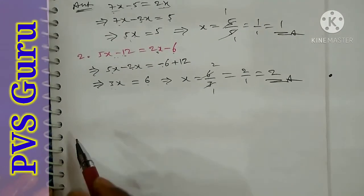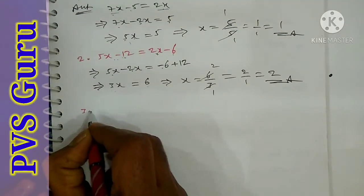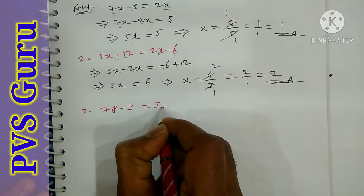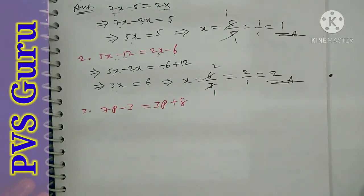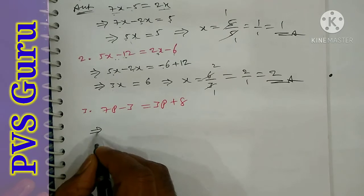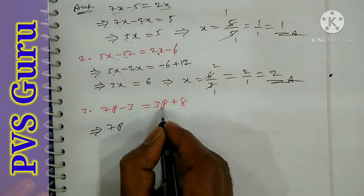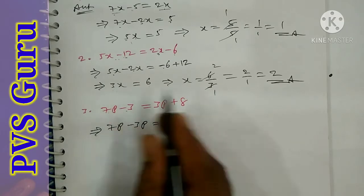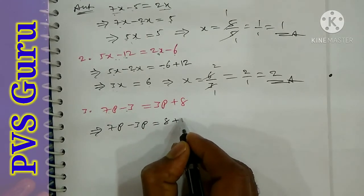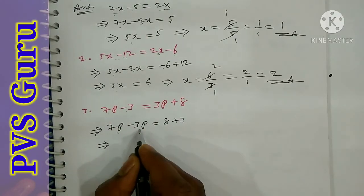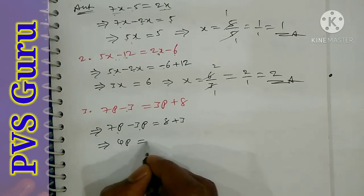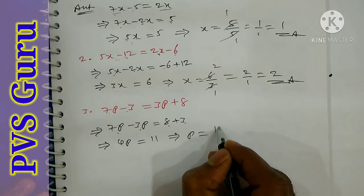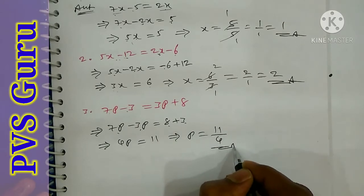Question number 3: 7p minus 3 is equal to 3p plus 8. Take 3p to the left side and minus 3 to the right side. 7p minus 3p is 4p. 8 plus 3 is 11. So p is equal to 11 by 4.